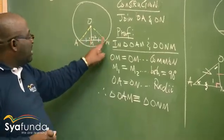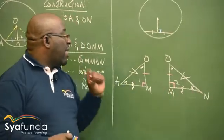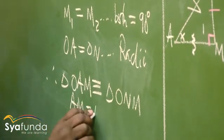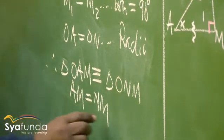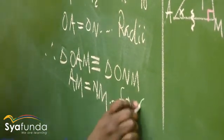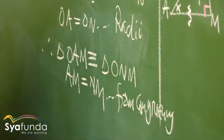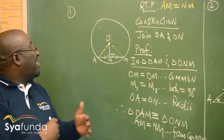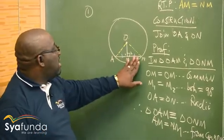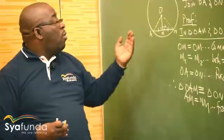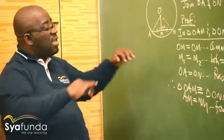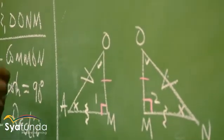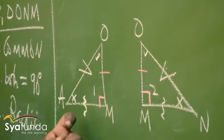We wanted to prove that this side is equal to this side. Therefore AM equals NM. Why are the two sides equal? We got that from the fact that they are congruent - from congruency. This is how you go about proving that AM equals NM. Remember the theorems build on each other. We used the fact that the two triangles are congruent - we first proved that this triangle is congruent to this one, and therefore the corresponding sides are equal. Thank you.